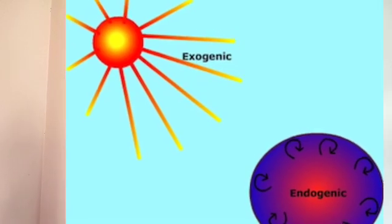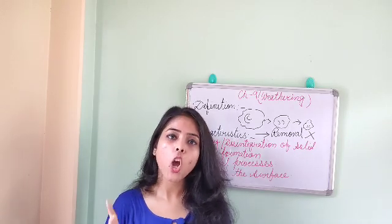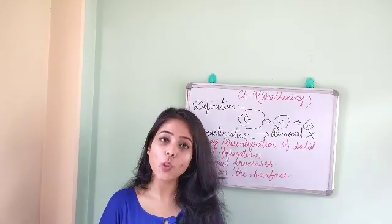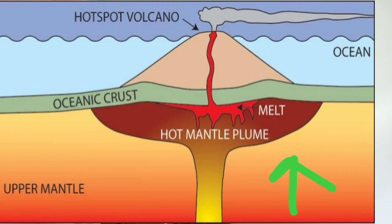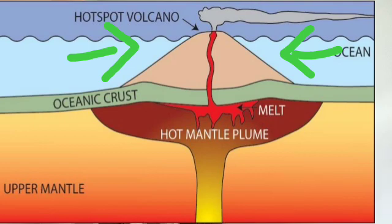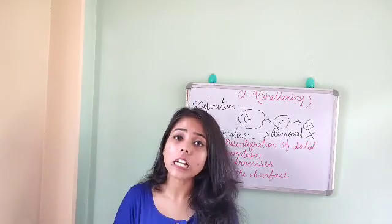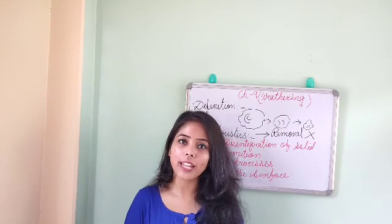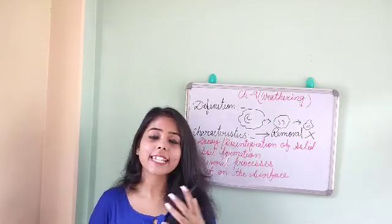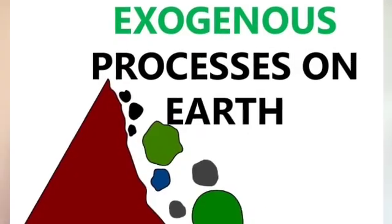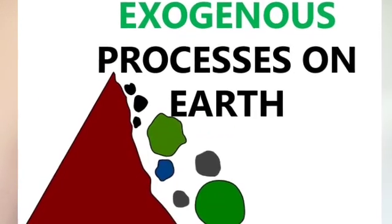The force that generally acts below the earth's crust is known as internal force, also called constructional force, because while acting below the crust it creates important landforms on the surface of the earth. The other one is exogenic force or external force — when a force acts on the surface of the earth, not below it, it is known as exogenic force.